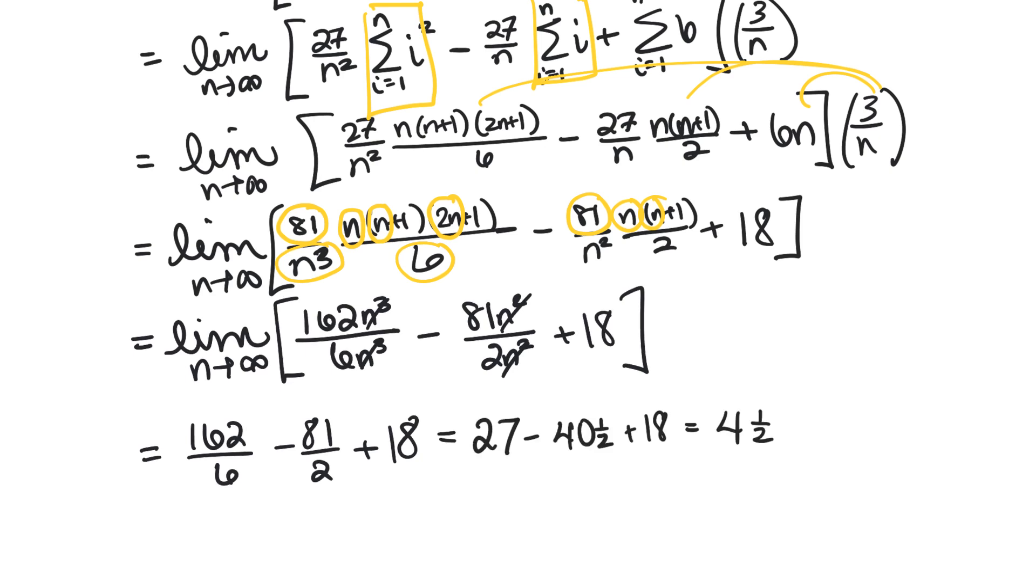So we have 162 divided by 6 is 27 and 81 divided by 2 is 40 and a half and then we have our 18 again and this comes out to 4 and a half. So if we were measuring that velocity in miles per hour then the displacement would be that the hiker had gone 4 and a half miles after 3 hours.